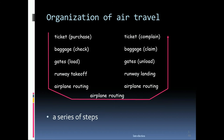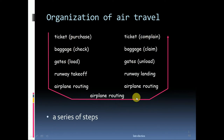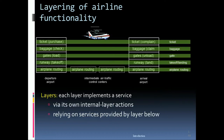We can take the example of air travel to understand this. The organization of air travel involves: purchase ticket, baggage check, gates, runway takeoff, airplane routing, runway landing, gates, unload, baggage claim, and ticket complaint. This is the whole process — a series of steps — and we can compare this process to the process of network layers.